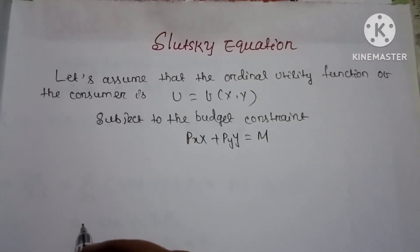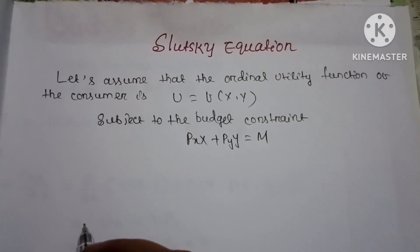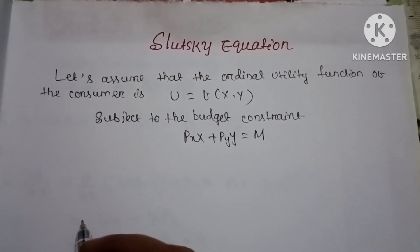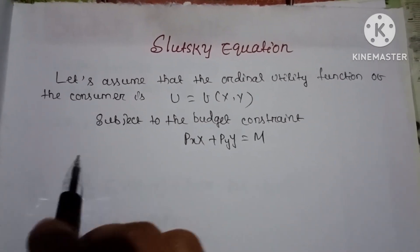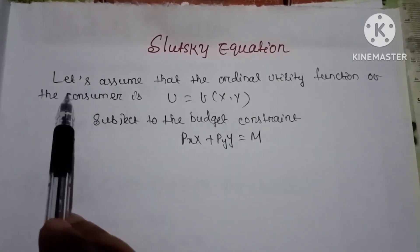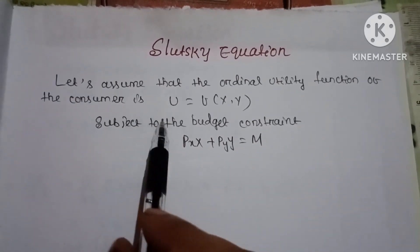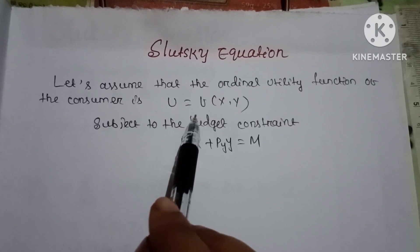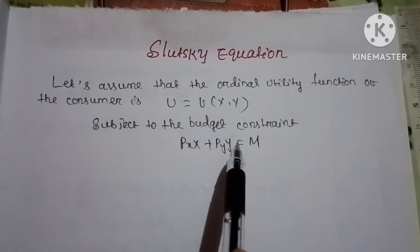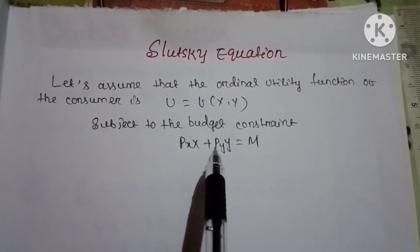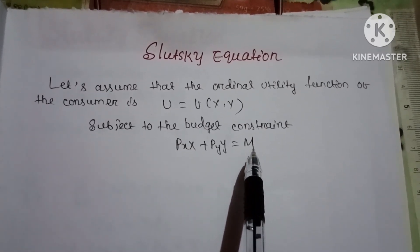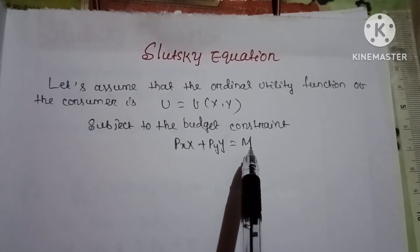Namaskar, welcome to Psychonomics Point. In today's lecture we will discuss the derivation of the Slutsky equation. Let's assume that the ordinal utility function of the consumer is given by u equal to a function of x and y, subject to the budget constraint px·x plus py·y equal to m, where m represents the income of the consumer.